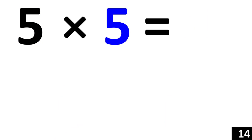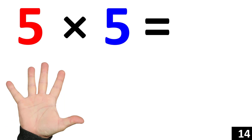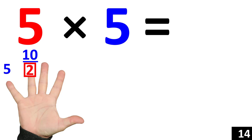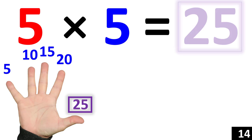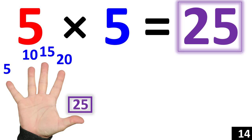5 times 5 is the same thing as counting by 5 five times. 5. 10. 15. 20. 25. Therefore 5 times 5 is equal to 25.